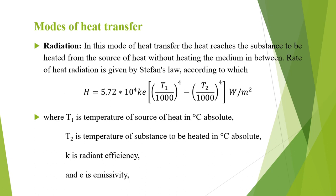The rate of heat radiation is given by Stefan's law: H = 5.72 × 10⁻⁴ × K × e × [(T1/1000)⁴ − (T2/1000)⁴] watts per square meter, where T1 is the temperature of the source of heat in degrees Celsius absolute, T2 is the temperature of the substance to be heated in degrees Celsius absolute, K is the radiant efficiency — its value is 1 for a single element and varies from 0.5 to 0.8 for several elements placed side by side — and E is the emissivity: 1 for a black body and 0.9 for resistance heating elements.